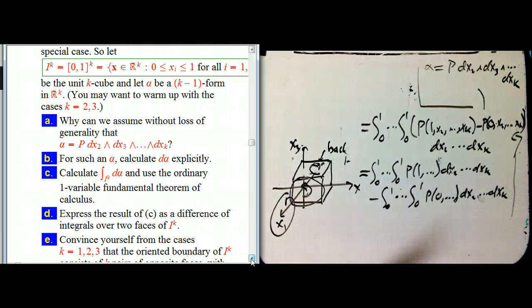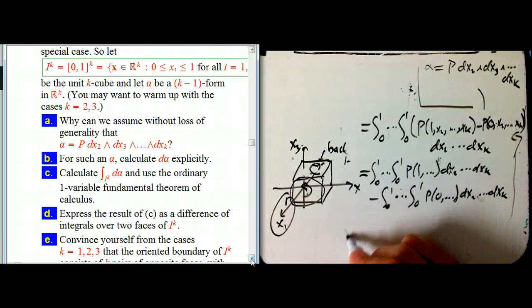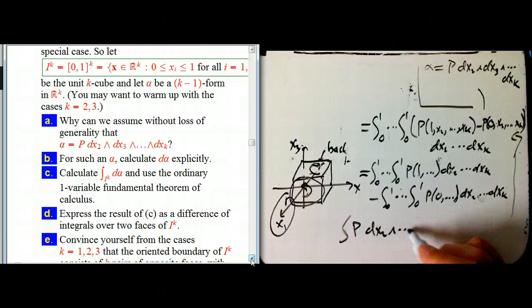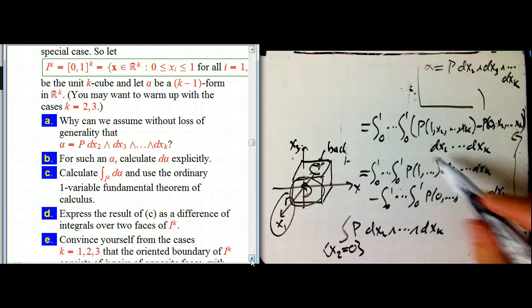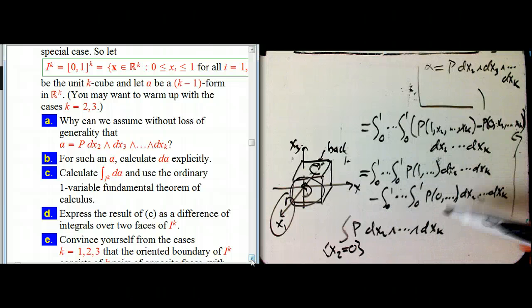But let's think about what, for example, the integral of like p dx_2 dx_k over like the face where say x_2 is zero. Remember, these guys are faces where x_1 is set to be one or zero. But what if the thing is set to be a constant is one of the variables in the dx's?